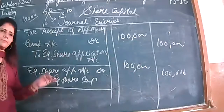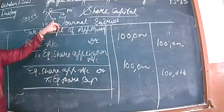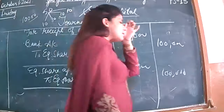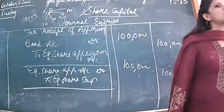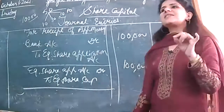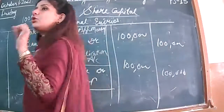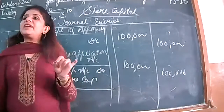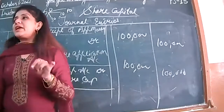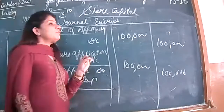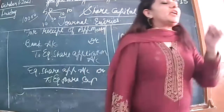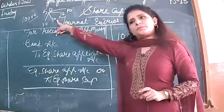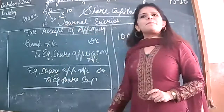Now the next sequence: allotment money. What is the next step from the company? We will inform our shareholders by sending mail to them that you are being selected to be our shareholder. We are ready to allot you shares. When we are ready to allot them, we will inform them and tell them how much money they have to pay for allotment — that is 30 rupees per share. So the next step is: allotment money is due.